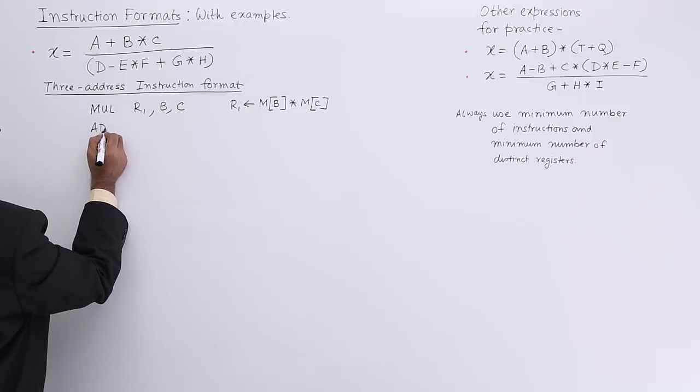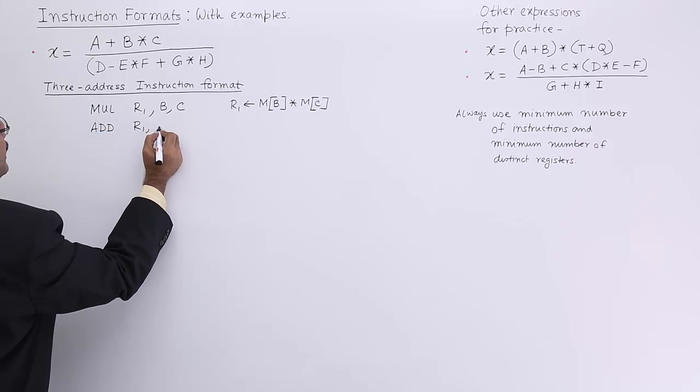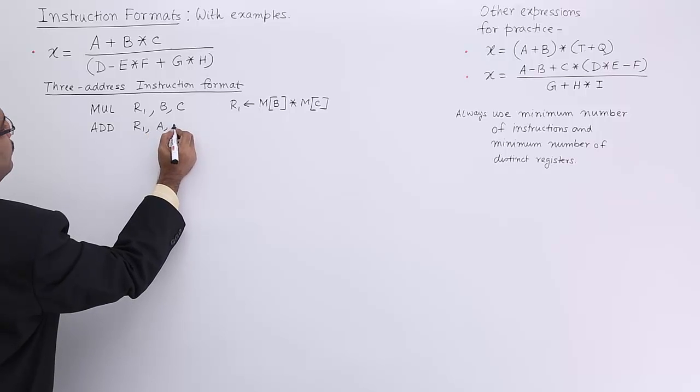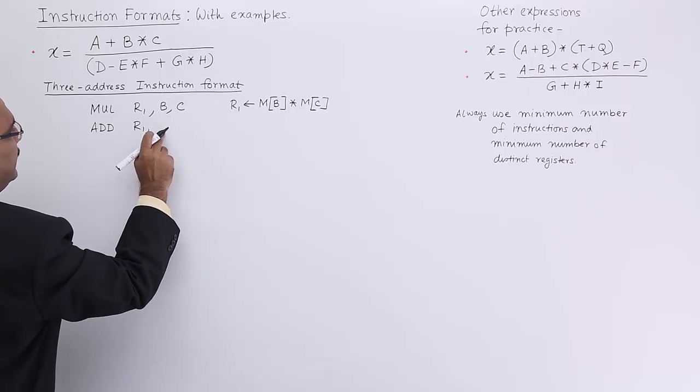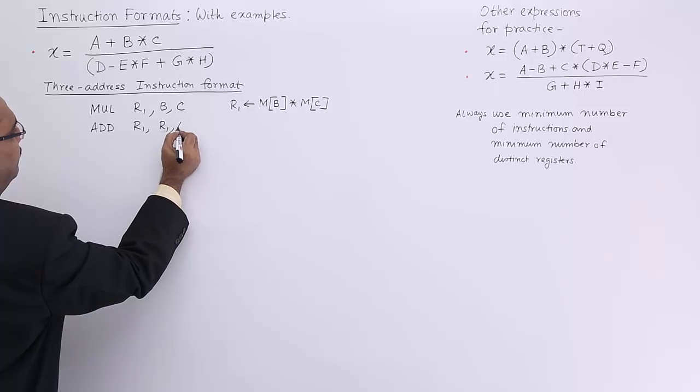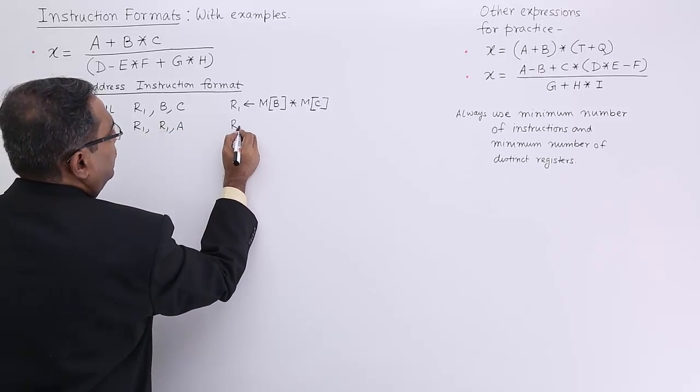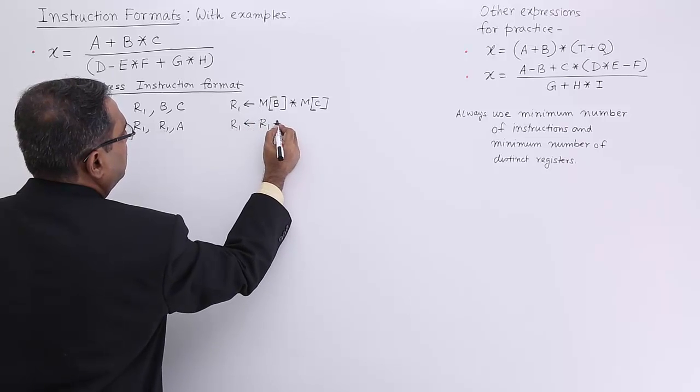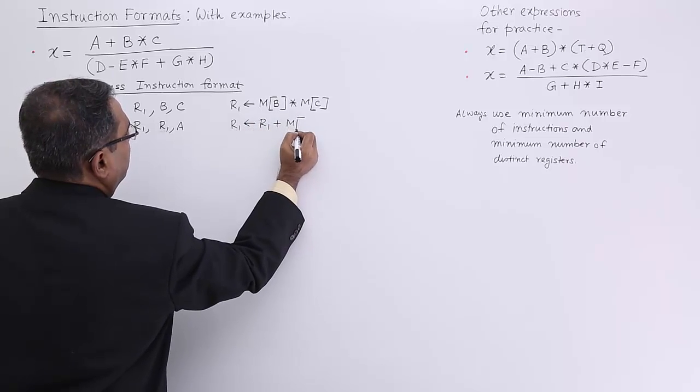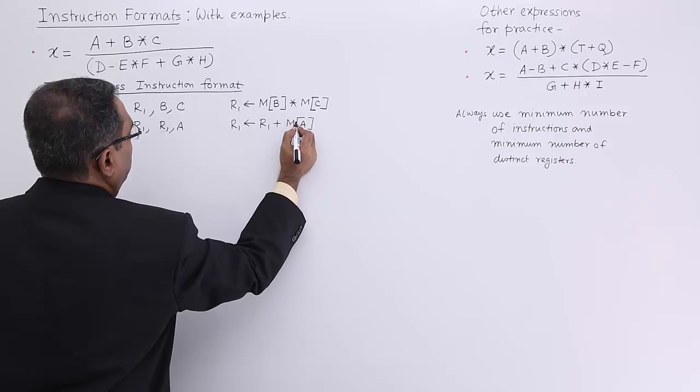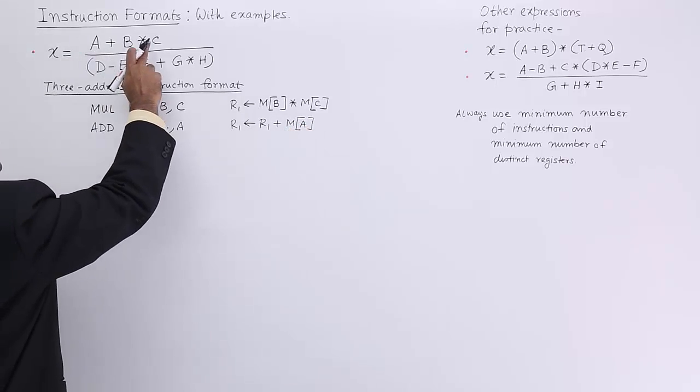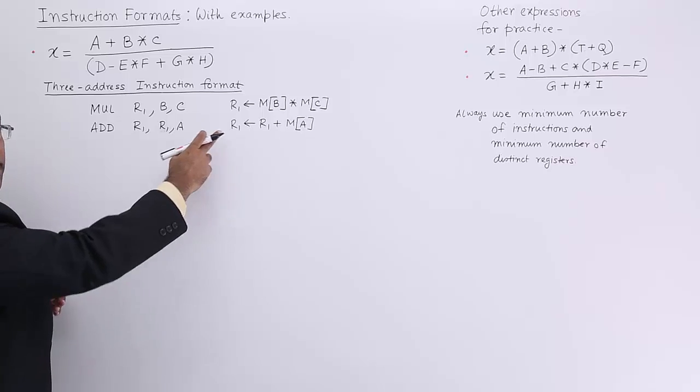Add R1, A, R1. We are getting R1 initialized with memory content for the variable A. Numerator has been done and everything is now kept in R1.